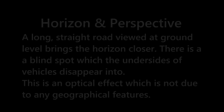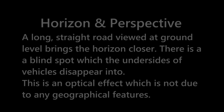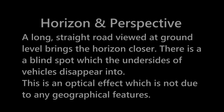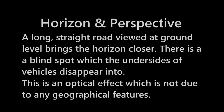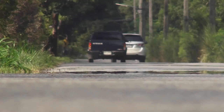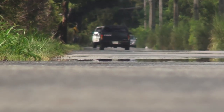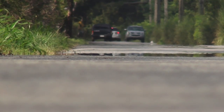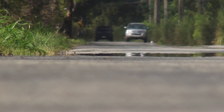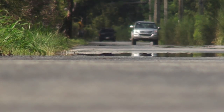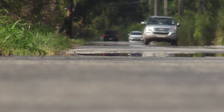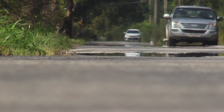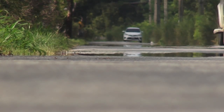Now let's look at horizons and perspective. A long straight road viewed at ground level brings the horizon closer. There is a blind spot which the undersides of vehicles disappear into. This is an optical effect which is not due to any geographical features. So here is a long straight road — the camera is resting on the ground — and we can see some mirage and refraction effects, but essentially the vehicles are going off into the distance and getting smaller, and the undersides are disappearing.